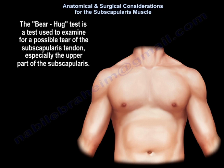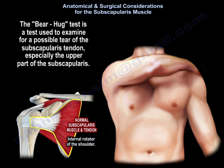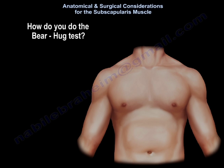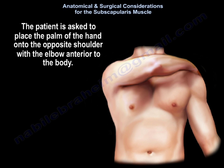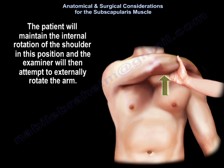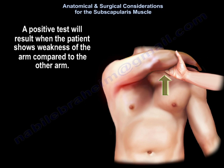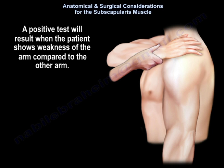The bear hug test is used to examine for a possible tear of the subscapularis tendon, especially the upper part. The patient places the palm of the hand on the opposite shoulder with the elbow anterior to the body, maintaining internal rotation while the examiner attempts to externally rotate the arm. A positive test results when the patient shows weakness compared to the other arm.